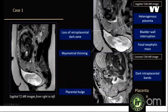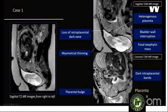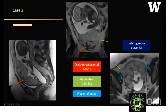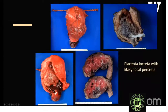Case 1: Sagittal T2-weighted images showing a focal placental bulge, myometrial thinning, loss of retroplacental dark zone, heterogeneous placenta, bladder wall interruption, focal exophytic mass, and dark intraplacental bands. This was a patient with placenta increta. Case 2: Red arrows show dark intraplacental bands; green arrows show myometrial thinning — the myometrium is well-visualized superiorly but completely thinned out inferiorly. Focal placental bulge is seen bilaterally with intact serosa. This patient underwent hysterectomy and had placenta increta with likely focal percreta.